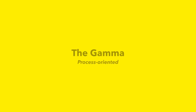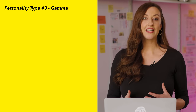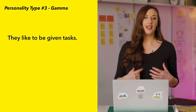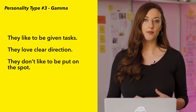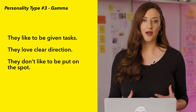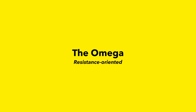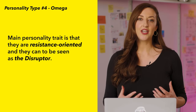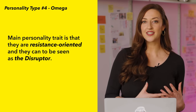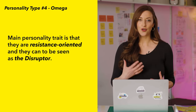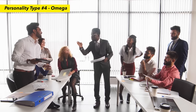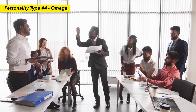The next type is the gamma. People with this personality type like to be given tasks, love clear direction, and don't like being put on the spot. The last type is the omega — resistance oriented, can be seen as the disruptor within the workshop. People with this type need to be asked for their input and given space for new ideas.